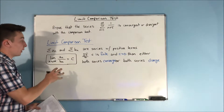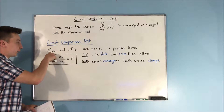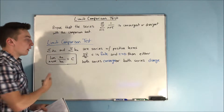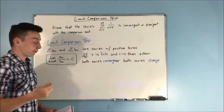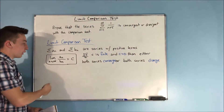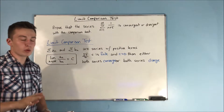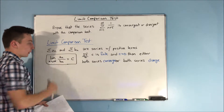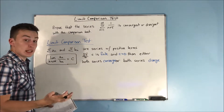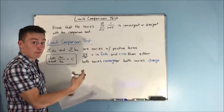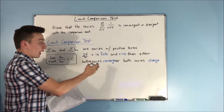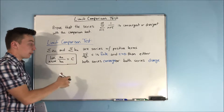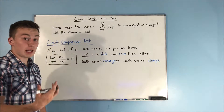Here is the limit comparison test. We have two series — the sum of a sub n and the sum of b sub n — and these are series with positive terms. We take the limit as n approaches infinity of a sub n over b sub n, and we set that equal to c. If that c is finite and greater than 0, then either both series a sub n and b sub n will converge, or both series will diverge.